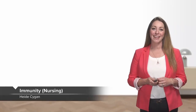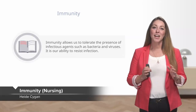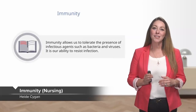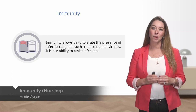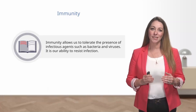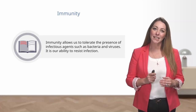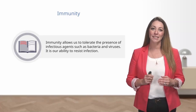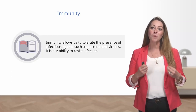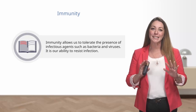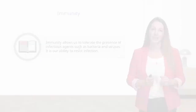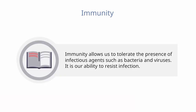Let's talk about immunity. Immunity allows us to tolerate the presence of an agent such as a bacteria or a virus. It's our ability to resist infection. There are several types of immunity that prevent infectious disease, so let's talk about those different types.